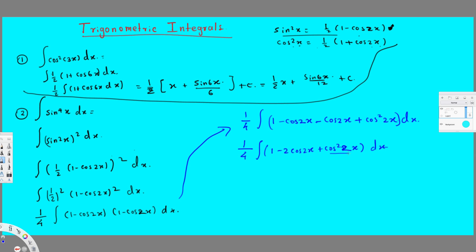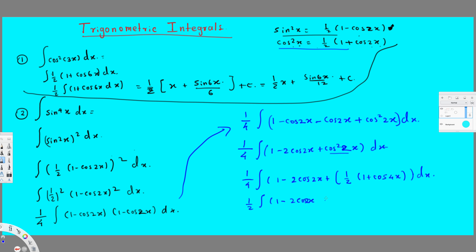For cos²2x we can use the formula, which gives half times (1 + cos4x) because 2x doubles to 4x. So plugging that in and multiplying through by half, we get 1 - 2cos2x + 1/2 + cos4x/2 inside the integral. Adding 1 + 1/2 gives 3/2, so we have 1/4 times the integral of (3/2 - 2cos2x + cos4x/2) dx.